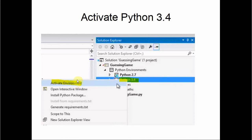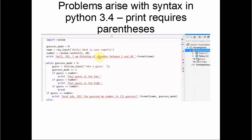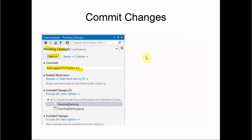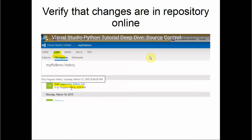Activating Python 3.4 causes errors because the code was originally written in 2.7. The errors are with the print command, so he cuts and pastes code to fix them — putting parentheses around all the print commands and changing raw_input to the Python 3.4 equivalent. That gets rid of all those errors. He then shows that you can commit your changes by checking in through TFS, and verifies on the TFS web repository that these changes were checked in for 3.4.